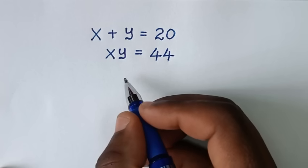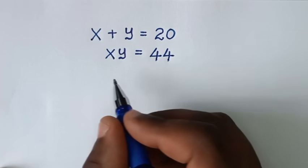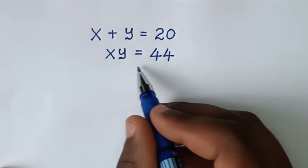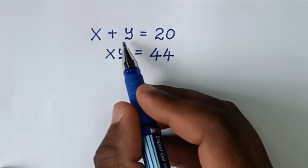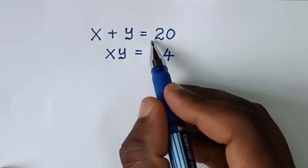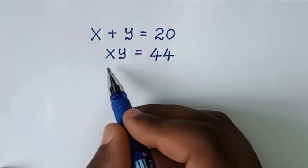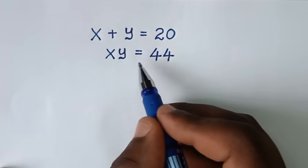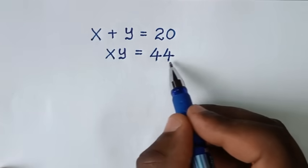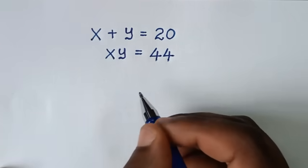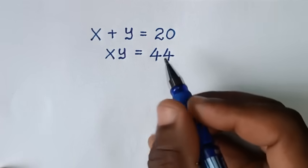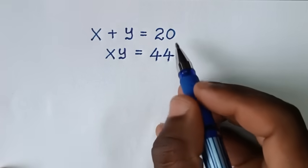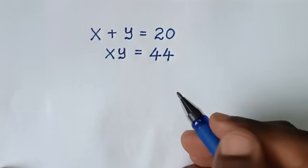Hello, you are welcome to solve this math problem: x plus y is equal to 20, and x times y is equal to 44. We need to find the values of x and y from these two systems of equations.